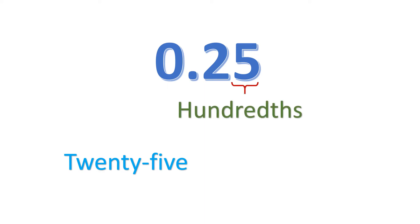Now how about 0.25? We're going to start with the number at the right side of the decimal point, which is 25. We have two numbers here, meaning two place values — it can be tenths or hundredths. The rule is to always use the rightmost place value. The rightmost place value here is the hundredths place, so it's 25 hundredths.